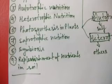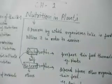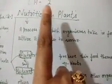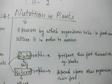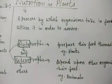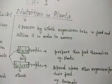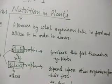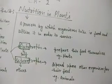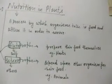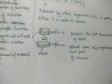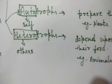The word nutrition comes from nutrients. Nutrients are the substances that we get from food — like carbohydrates, proteins, fats, vitamins, and minerals. So what is nutrition? Nutrition is the process by which an organism takes in food and utilizes it in order to survive.